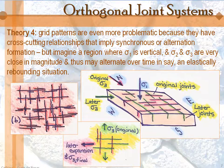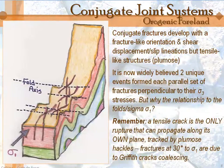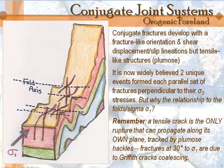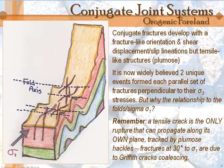There's still a lot of debate about exactly how this happens and how to read historical stress fields from what you observe, so you might want to develop your own theories. Now, regarding conjugate joint systems — recall that the bisector of the acute angle identifies sigma-1, with the acute angle roughly 60 degrees and the obtuse angle 120 degrees, since fractures form at a 30-degree angle to sigma-1. Those are shear fractures — coalesced Griffith cracks.